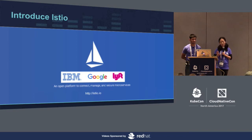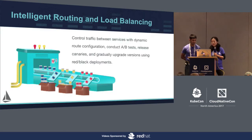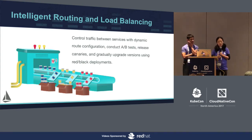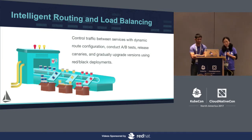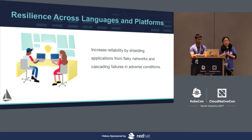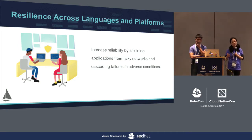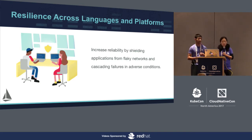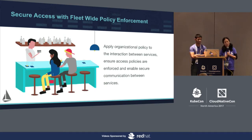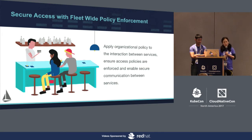You guys already know Istio. This is a project launched by IBM, Google, and Lyft since May this year. We're really trying to bring Istio to solve these problems. We mentioned intelligent routing and load balancing so users can quickly do A/B testing and canary testing before they change to a new version. It helps you do resilience testing across different languages and platforms. You can also do policy enforcement on the entire service mesh — we're going to talk about rate limiting as an example of that very soon.